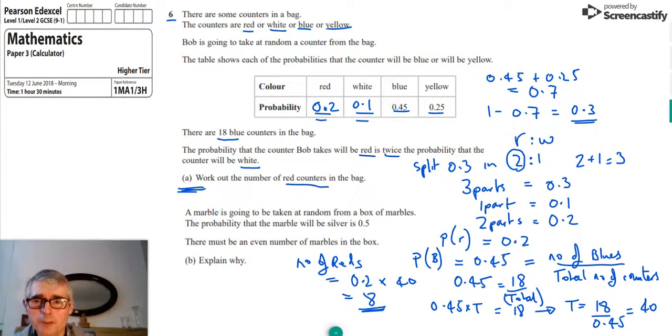For part B, we're in a different situation. It says a marble is being taken at random from a box of marbles, and the probability that the marble will be silver is 0.5. So we've got to explain why it must be the case that there's an even number of marbles in the bag.